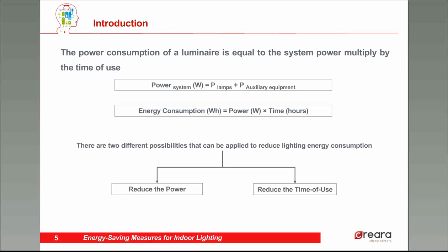The energy consumption of a luminaire is equal to the system power times the time of use. The system power is the power of the lamps plus the power of the auxiliary equipment. This system power times the time of use is the energy consumption of my lighting system. Based on this formula, there are only two ways we can reduce the energy consumption: reduce the power, or reduce the time of use.